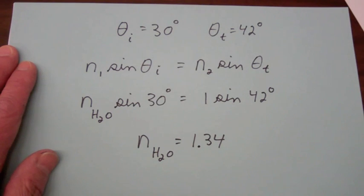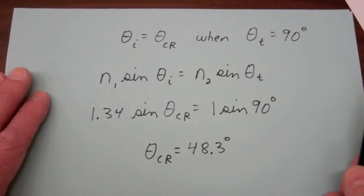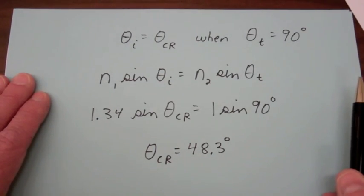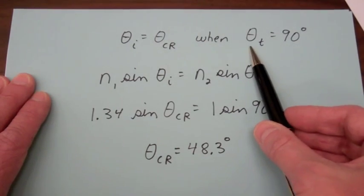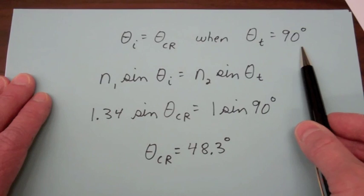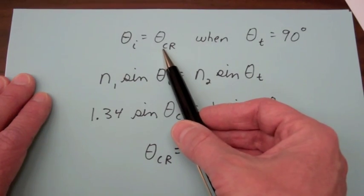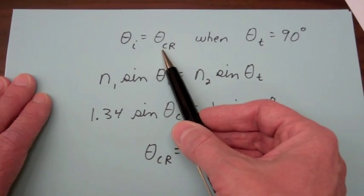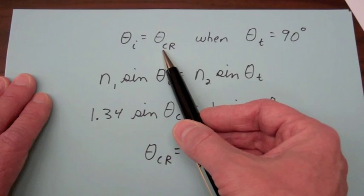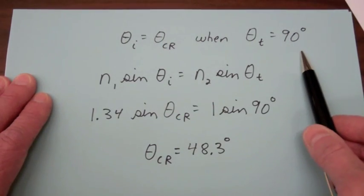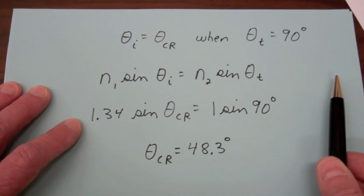So we've got fairly close for this simple experiment. If we increase the incident angle until the transmitted angle is 90 degrees that is referred to as the critical angle because for any angle then greater than the critical angle for the incident beam we'll get total internal reflection and we'll show that in a minute.